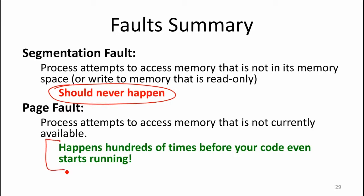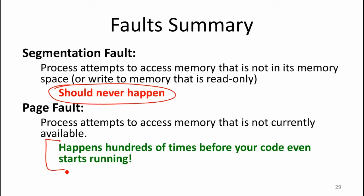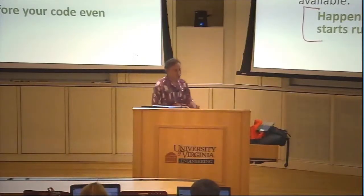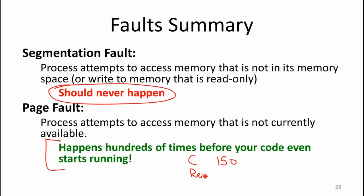Page faults happen all the time. What you saw from Michael's demo is that when he set the number to zero, you're seeing the number of page faults it takes to get a program to start running. It's not even doing anything. For C, he was seeing about 150 to start running. For Rust, it was around 500. And for Python, it was over 1,000.